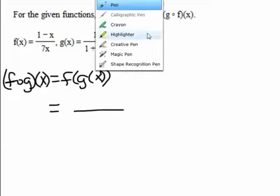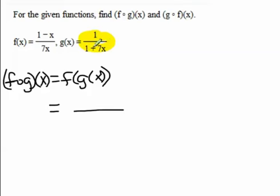What does that tell me to do? It tells me to take this, 1/(1+7x), and replace the x in the f function. So I'm going to plug g into f.